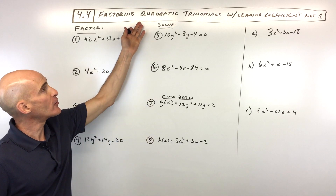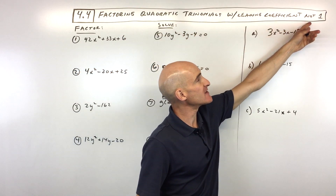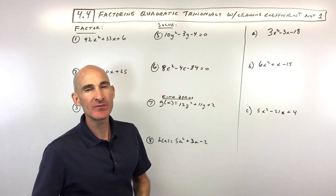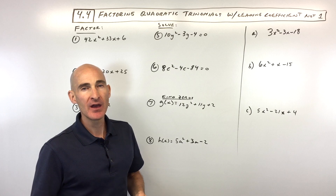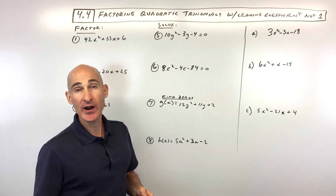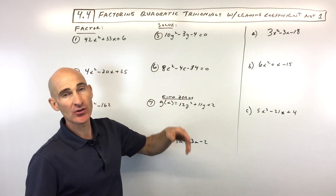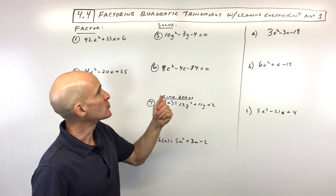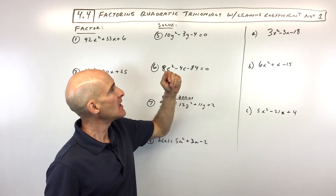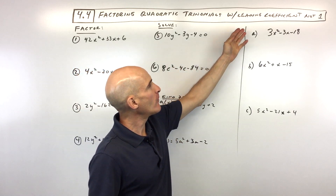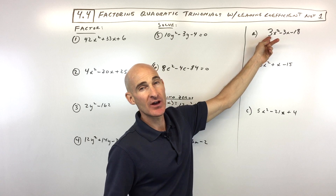We're going to be talking about factoring quadratic trinomials with a leading coefficient that's not one. These tend to be the most difficult for a lot of students. Quadratic just means that it's a second degree, like x squared. A trinomial means three terms, where the terms are separated by minus or plus. And the leading coefficient not one means that the starting coefficient is going to be something other than one.